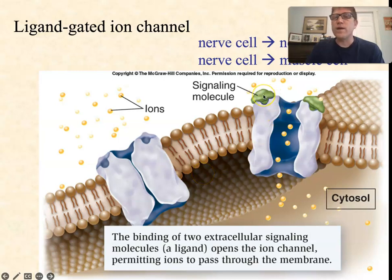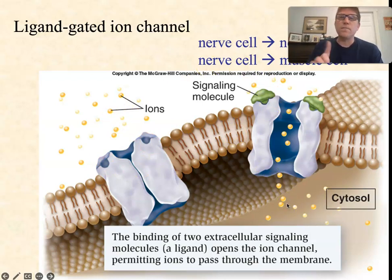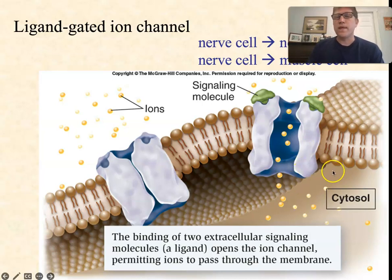The original or primary signal was the hormones, but in many cases these ions that move through become what's called a second messenger — a second signal. We'll talk about second messengers in a later video.